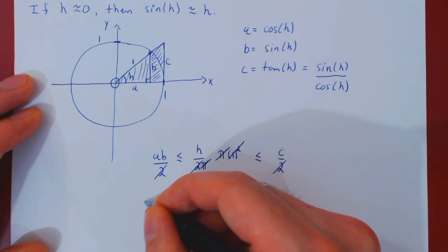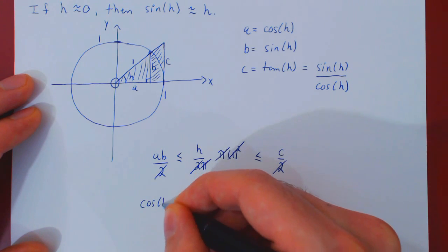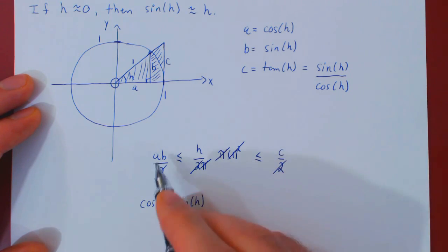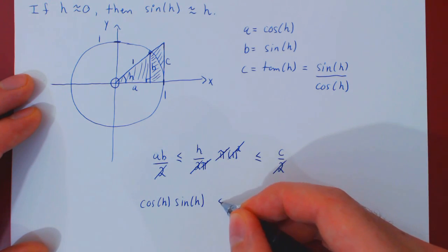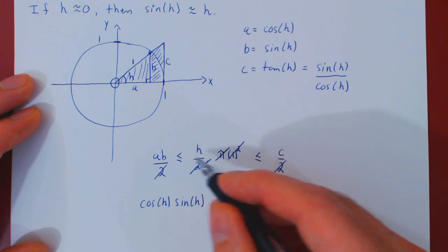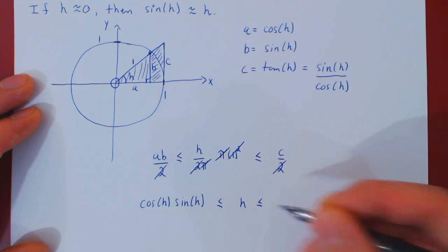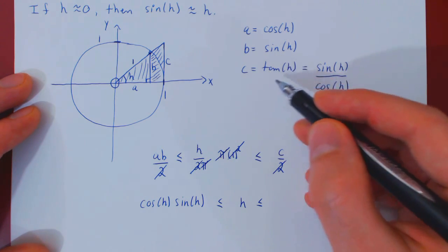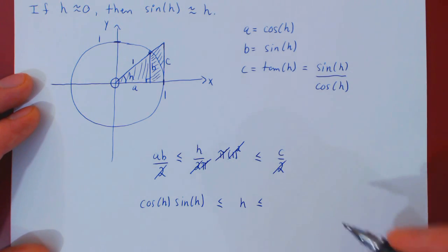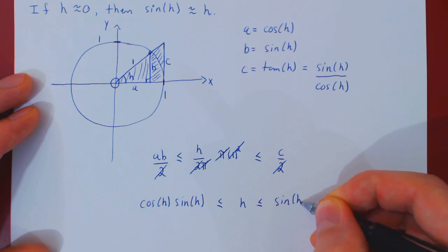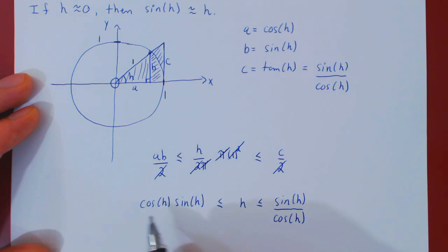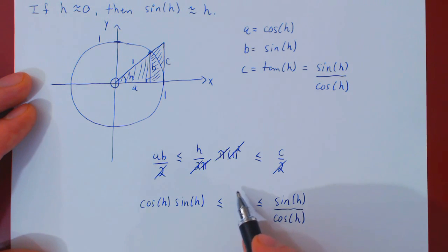Substituting a equals cos of h, b equals sine of h, and c equals tan of h, which is sine of h over cos of h, we obtain the inequality: cos of h times sine of h is smaller than h, which in turn is smaller than sine of h over cos of h. So h is captured between these two expressions involving h.